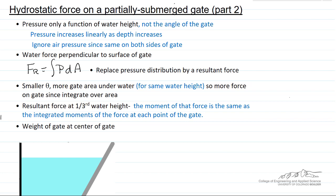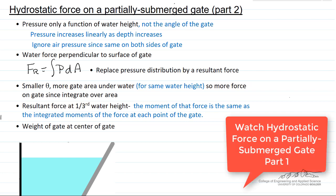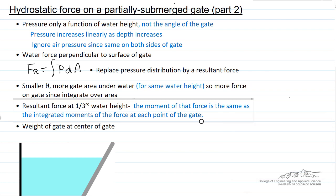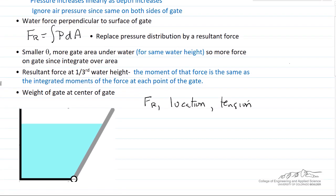In this screencast, we're going to calculate the forces and their location for a partially submerged gate. In part one, we discussed the various aspects listed here. Now we're going to do the calculations to determine the numerical values of Fr, its location, and the tension in the cable that holds the gate up.